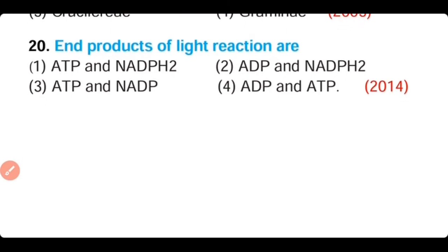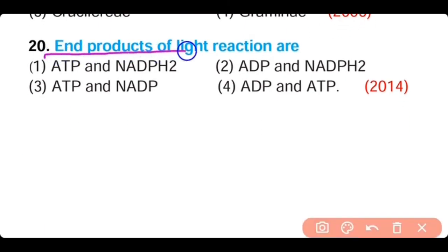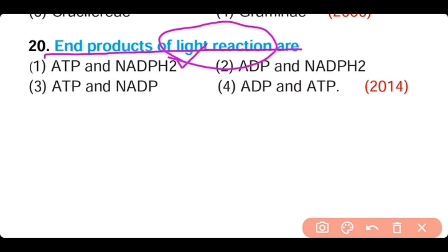Question number 20. The end products of light reactions are: ATP and NADPH2, ADP and NADPH2, ATP and NADPH, or ADP and NADPH. The correct answer is option 1. ATP and NADPH2 are the end products of the light reaction, synthesized during cyclic and non-cyclic photophosphorylation.